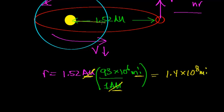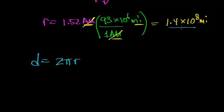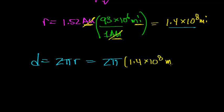That 1.4 × 10⁸ miles is the orbital radius. For Mars to revolve around the Sun once, it follows a circular path, so the distance it travels is not just the radius — it equals the circumference of a circle, or 2π times the radius. In this case, that's 2π times 1.4 × 10⁸ miles.